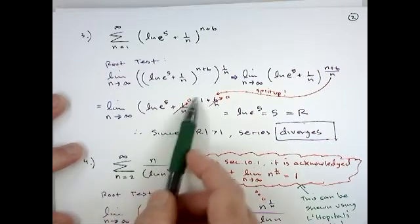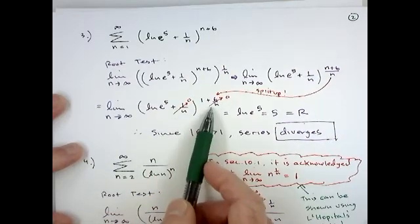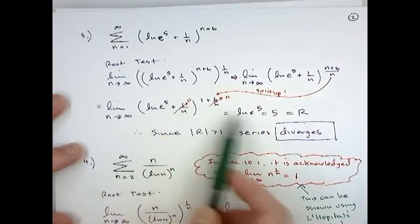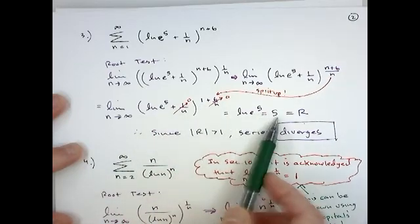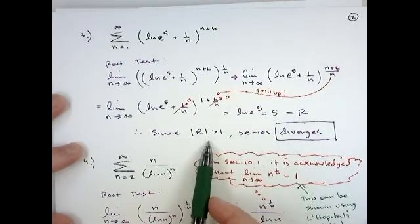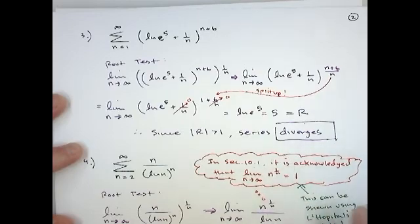And then if you let n go to infinity, this term is going to go to zero. This is going to go to zero. So we have the ln of e to the fifth to the first power is just going to give us 5. And so that would be our r value. This time it's bigger than 1. So that series would diverge.